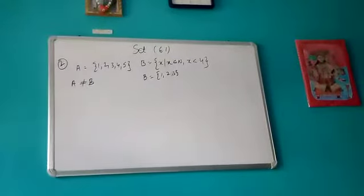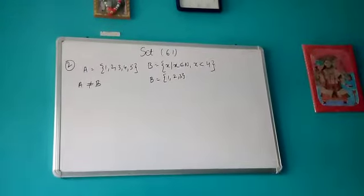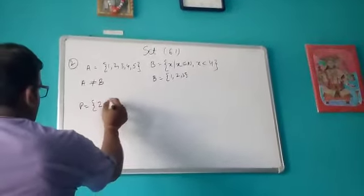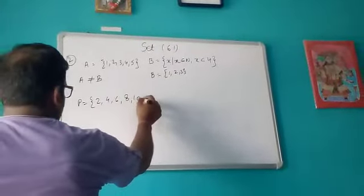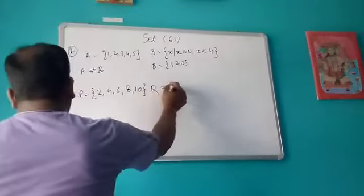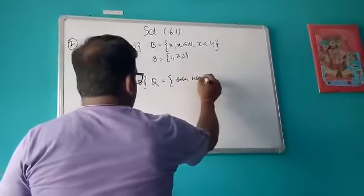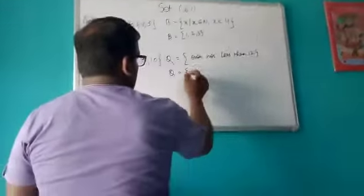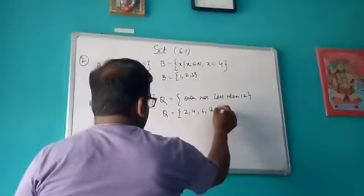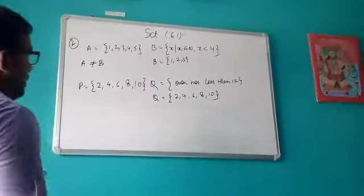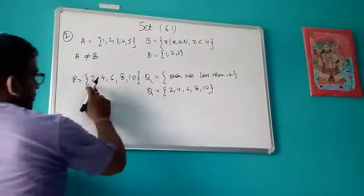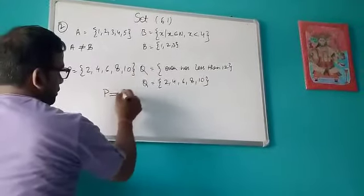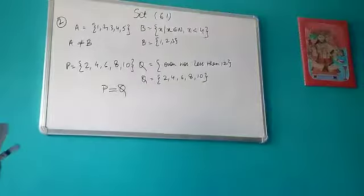If set A contains {1, 2, 3} and set B has different elements, then A is not equal to B. But suppose P = {2, 4, 6, 8, 10} and Q contains all even numbers less than 12, which also gives {2, 4, 6, 8, 10} — then P equals Q, since both sets contain the same elements.